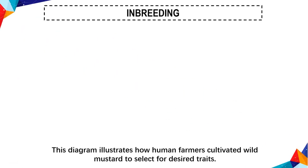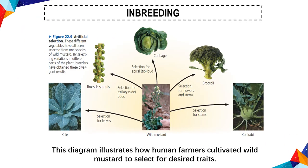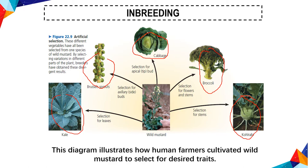This diagram illustrates how human farmers selectively cultivated wild mustard to produce desired traits. Different vegetables such as radish, broccoli, kohlrabi, kale, Brussels sprouts have all been selected from one species of wild mustard.